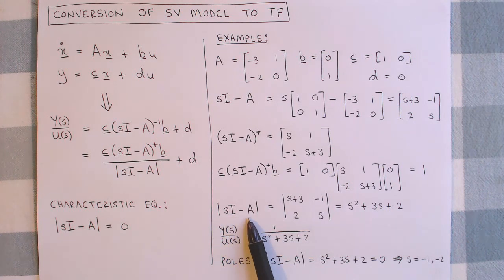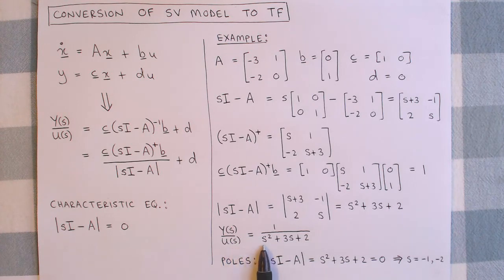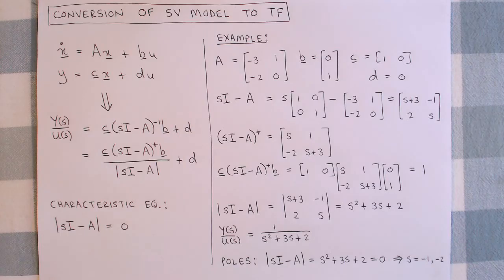The determinant of SI minus A is given by S squared plus 3S plus 2, and the transfer function can then be written as follows. The characteristic equation is the determinant of SI minus A equal to zero, and after solving this equation, we calculate the poles to be at minus 1 and minus 2. By transforming a state variable equation to a transfer function formulation, we can now use all the analysis techniques developed for transfer functions.